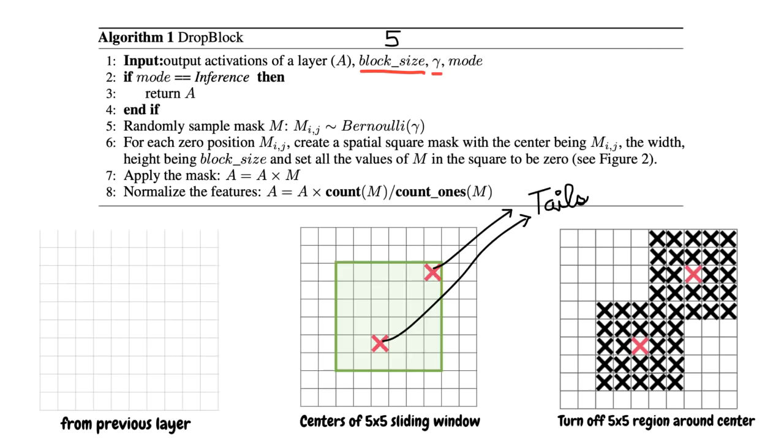And the gamma value, which is the parameter of the Bernoulli distribution, the bias of the coin flip I was talking about. We can then set gamma with this formula. Typically, it's a value between 0.75 and 0.95.